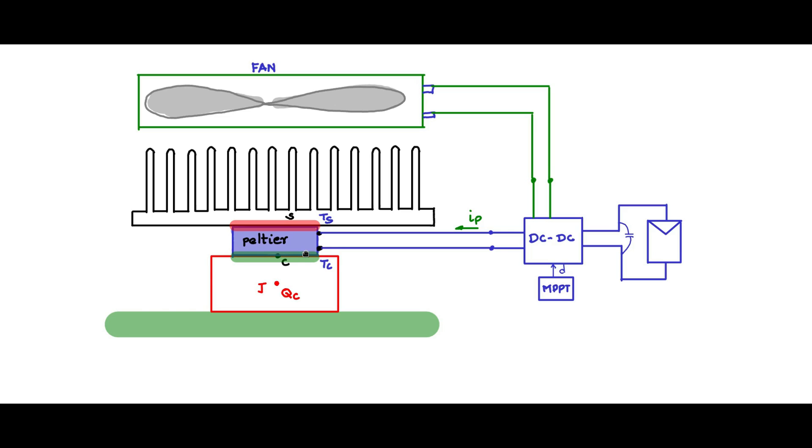Then after that, still the game is not over. The hot junction, the heat has to be removed at the same rate that the heat is removed from the object to be cooled. So the heat from the hot junction has to be put out into the atmosphere and not come back into the cold junction part.